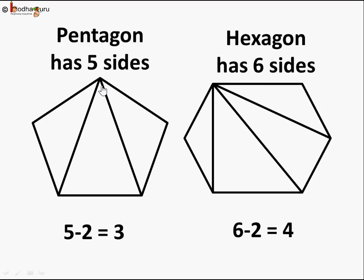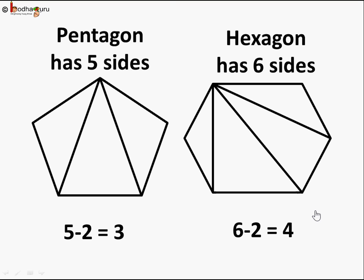Now let's observe the pattern. A pentagon has five sides and when we draw diagonals we get three triangles. Five minus two equals three. A hexagon has six sides and we get four triangles. Six minus two equals four.